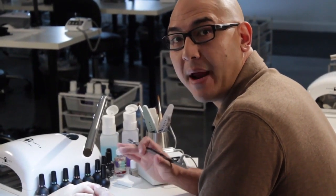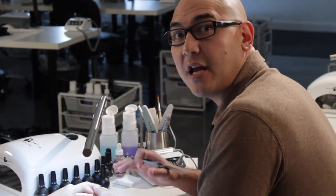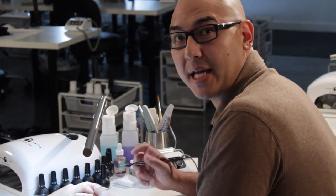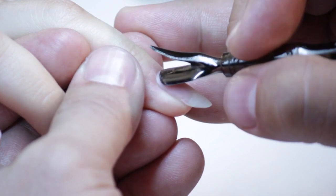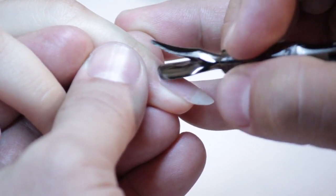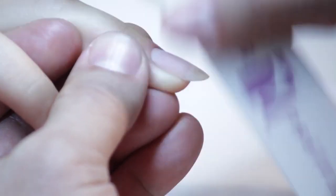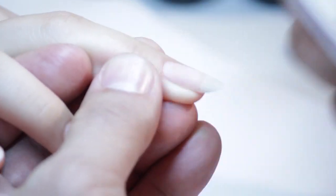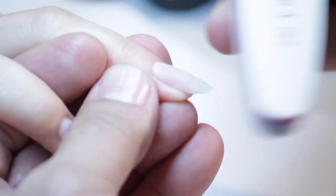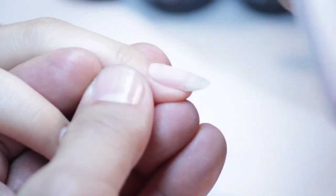Let's begin the process by preparing the natural nail and getting it ready for the perfect application. I'm going to begin by gently pushing the cuticles back. I'm going to use my 240 sponge file combo and use only the sponge side to remove the shine thoroughly from the natural nail.